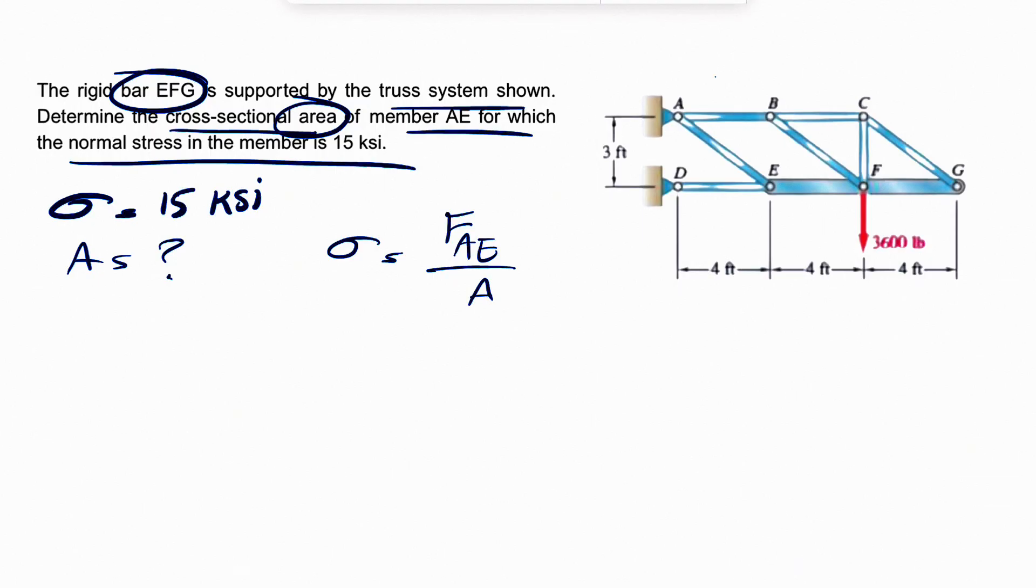So what we're going to do is that we have a truss in here, and we're going to use our method of sections. So we're going to do our section in here, and we draw the free body diagram for the right portion of this truss.